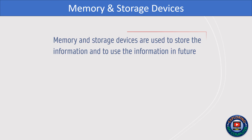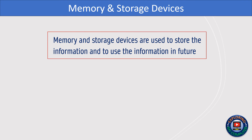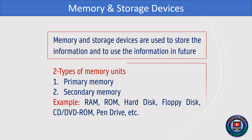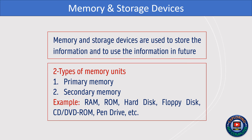Memory and storage devices are used to store and retrieve information for future use. There are two types of memory units: 1. Primary memory and 2. Secondary memory. Examples include RAM, ROM, hard disk, floppy disk, CD-ROM, pen drive, etc.